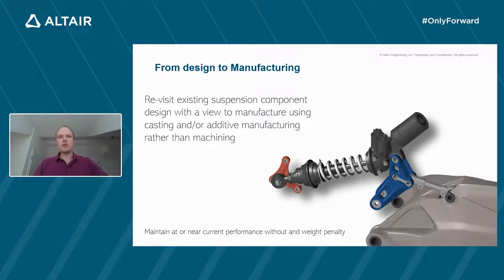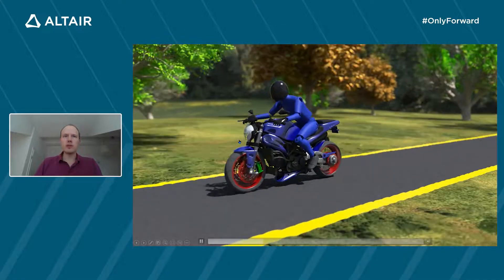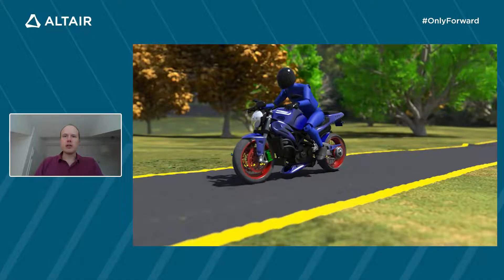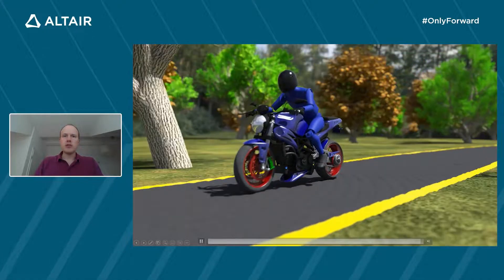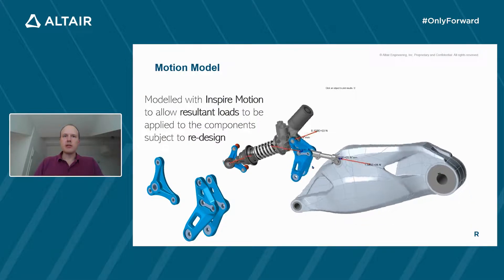The part we are going to optimize is the pivot link between the arm with the wheel attached to it and the frame of the motorcycle. We're going to use the optimization forces from the kinematic results — for example, using a road event. In our case, we used a single event which results in a single force, making it easier in terms of computation time.